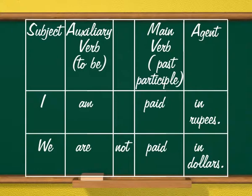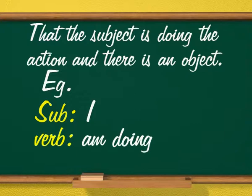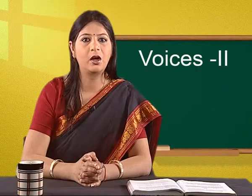When we are constructing a sentence with the verb in active voice, we have to take care that the subject is doing the action and there is an object. For example, subject is I, verb is am doing, object is the task. While writing a sentence with the verb in passive voice, the subject is no longer doing the action. It is done by an agent, and the doer of the work may not be mentioned.